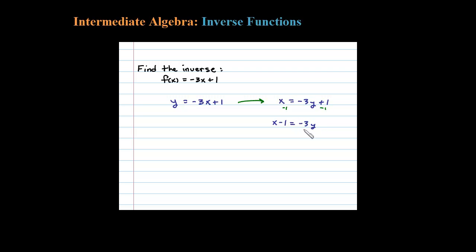And then dividing by negative 3, we have X minus 1 over negative 3 equals y. Now that's probably not what you're going to see in the back of the book. Let me write this as: